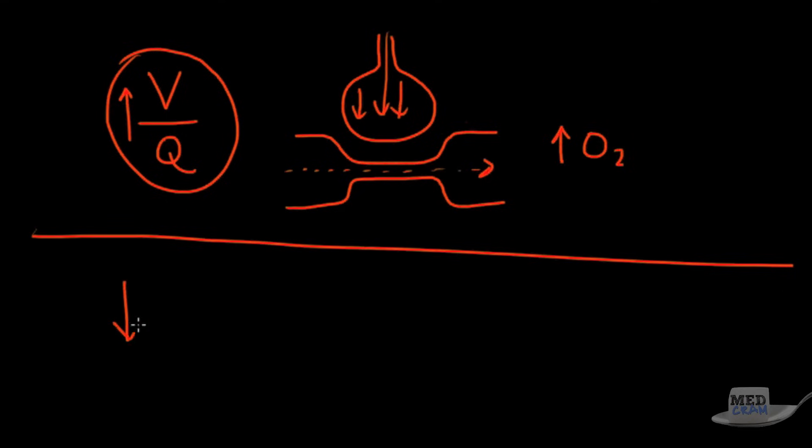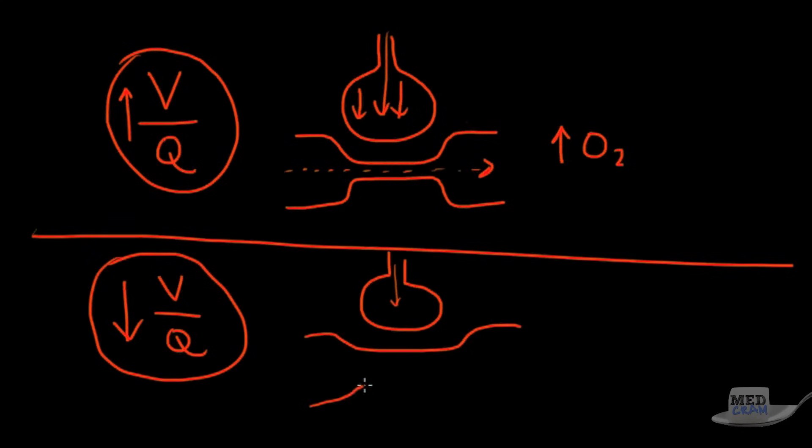That is opposed to an area of low VQ. In the area of low VQ, here's our alveolus again, we do have some ventilation, but the majority of this here what we have is we've got a lot of perfusion. As a result of that this ventilation is not able to saturate this area of perfusion and so we typically have low oxygenation.